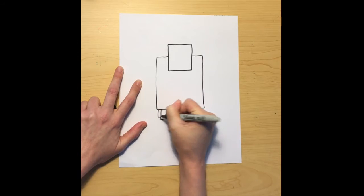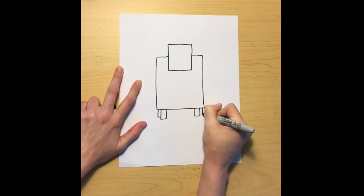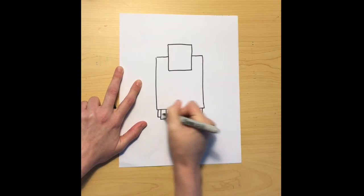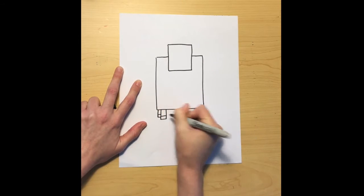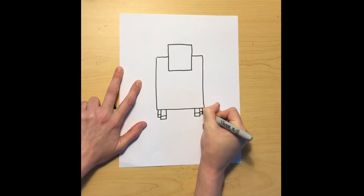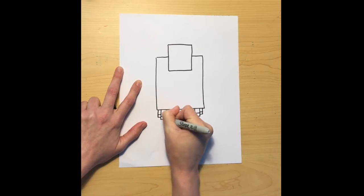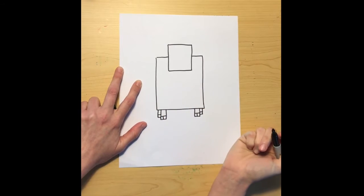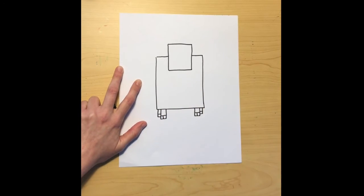Now we're going to draw some legs for our cow. We're going to use small rectangles. We'll draw two for the ones that are in front and add some little ones behind. I drew a line across and then a line down to make the hooves for my cow's feet.